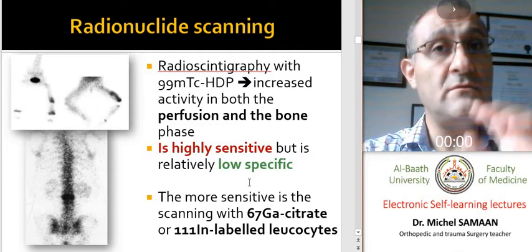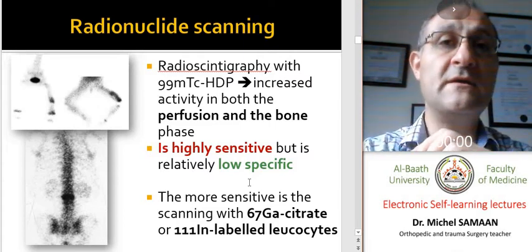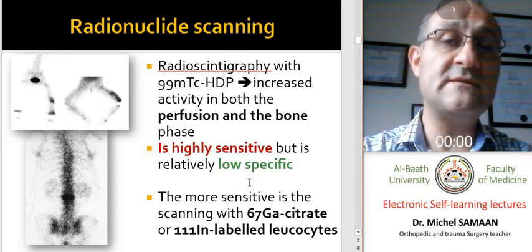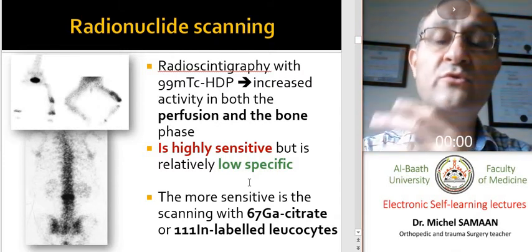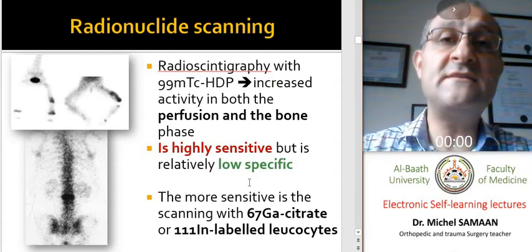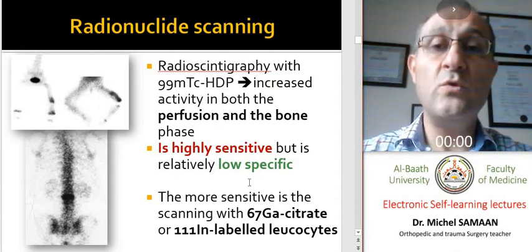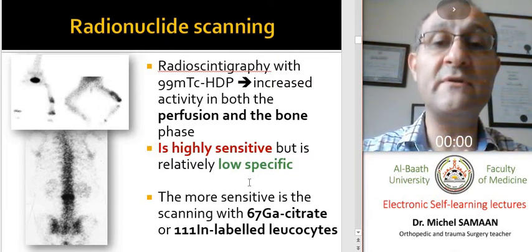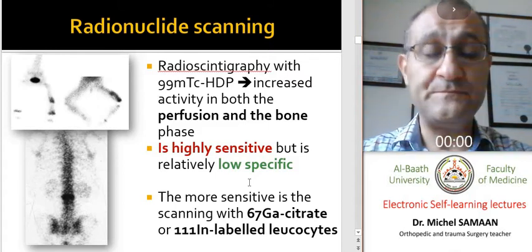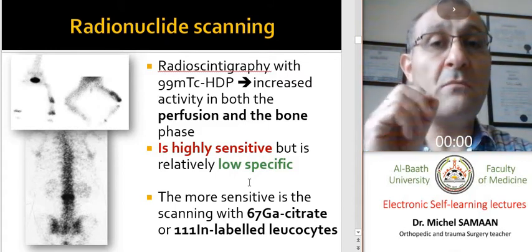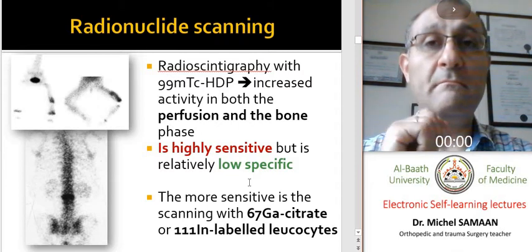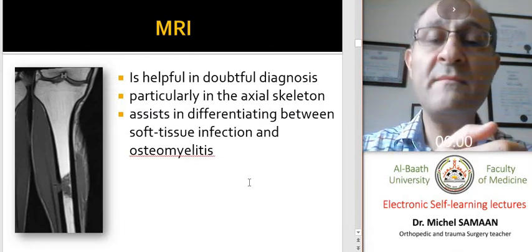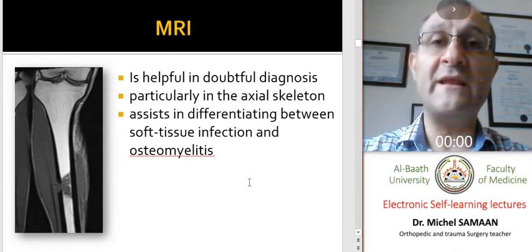We can diagnose that there is something unusual in the area, but it's not certain that it's an infection — it may be a fracture, tumor, or something else. To increase the specificity of the bone scan, we should use another method, for example the use of leukocytes labelled with indium or gallium citrate, which makes it more accurate and specific for infection.